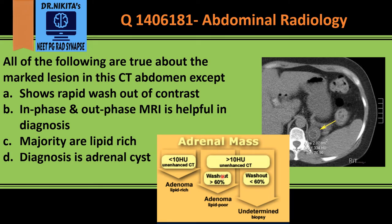To calculate washout, we compare the contrast scan and a delayed contrast scan to see how much contrast is washing out. Adenoma typically has a rapid washout. If the washout is more than 60%, it is an adenoma — but since the HU is more than 10, it is a lipid-poor adenoma. If the washout is less than 60%, the lesion is indeterminate and we need to biopsy it.